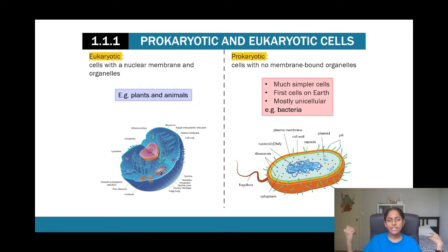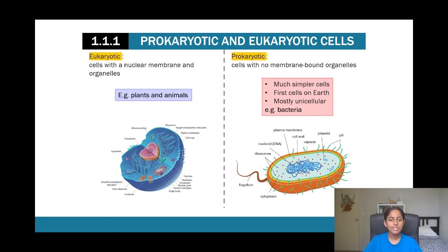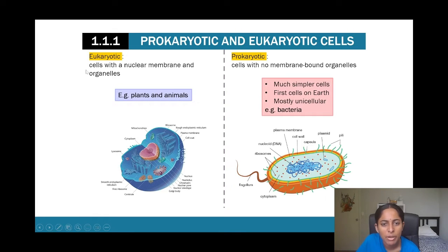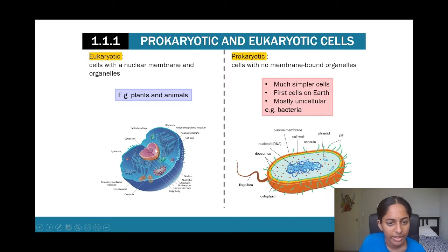Within cell structure, we look at different categories: eukaryotic and prokaryotic cells. This relates to the organelles present within the cell. Just like how the human body has organs, cells have organelles within them that help with functioning. Eukaryotic cells are cells that have a nuclear membrane and membrane-bound organelles — meaning each organelle is enclosed by a membrane. You can see this in the nucleus, which is surrounded by a membrane. Examples of eukaryotic organisms include both plants and animals.